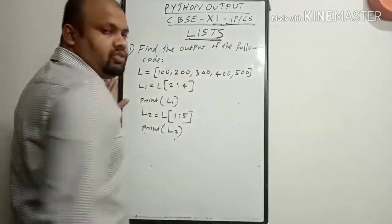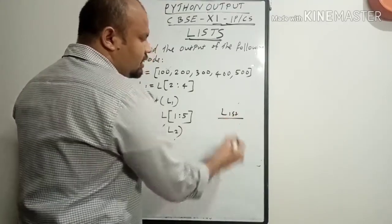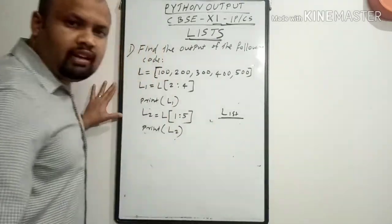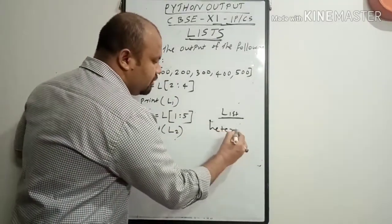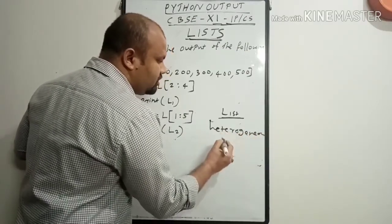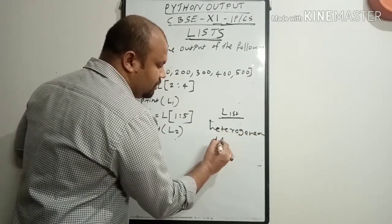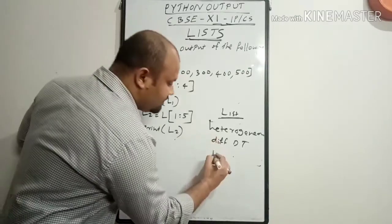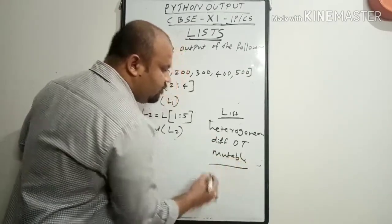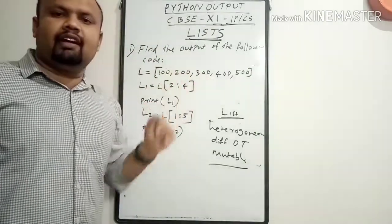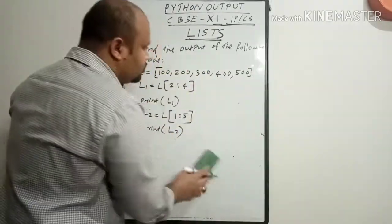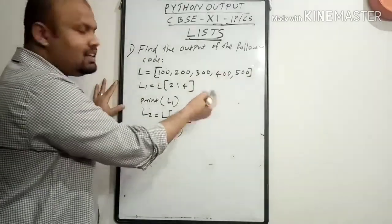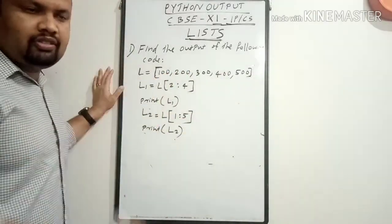Before going into detail, you have to understand what a list is. A list is a data structure used for storing elements. In a list we can store heterogeneous elements — heterogeneous means we can store different data type elements. List is also a mutable data structure — mutable means we can modify the elements. All list elements are treated under square brackets and the elements inside the list are separated by commas.